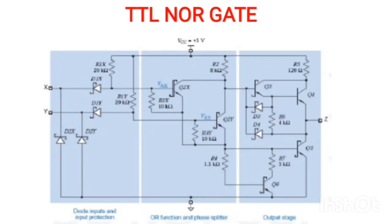Today we will discuss TTL NAND gates. The schematic of the TTL NAND gate is shown in the figure. The total circuit is divided into three stages: the first is the input protection stage, the second is the phase shifter, and the third is the output stage. The input protection stage protects the circuit from environmental effects like sudden power supply changes and temperature variations. The phase shifter shifts the phase based on inputs, either zero to one or one to zero. The output stage conducts either a low state or high state.